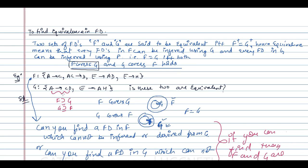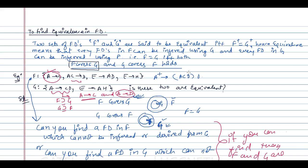In G, the dependency A→CD can be broken down to A→C and A→D. A→C is already present in F. A→D is not directly present in F, but take A-closure in F: from A we derive C, from AC we derive D. So A-closure contains D, hence A→D is also present in F.